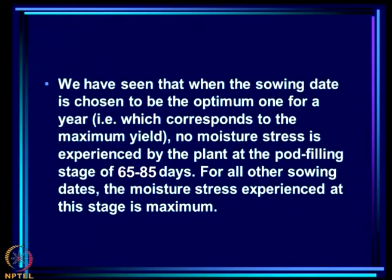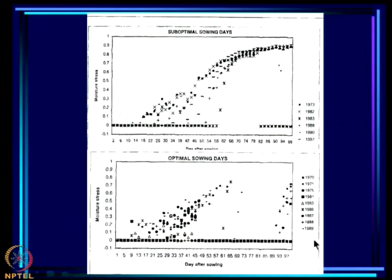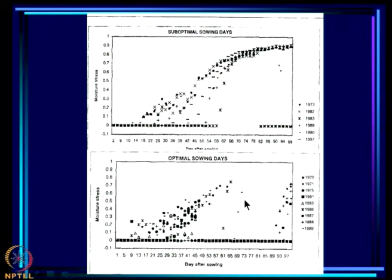For all the other sowing dates, the moisture stress is in fact maximum at that point. These are the other sub-optimal sowing dates where the moisture stress is maximum between 60 and 80 days, whereas for the optimal sowing dates the moisture stress is not at all present in this critical pod filling stage.